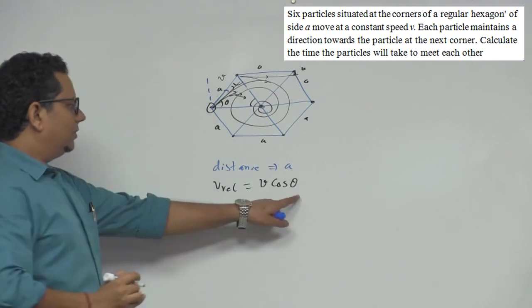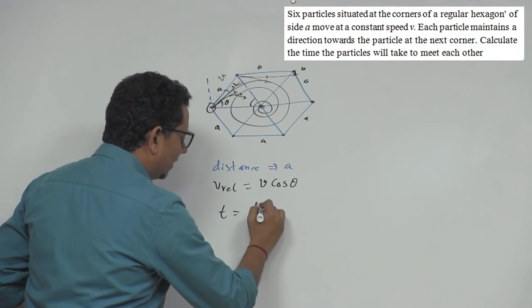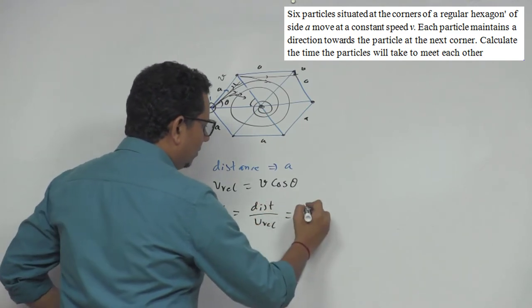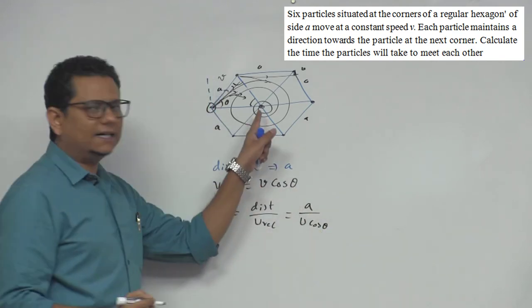So time taken will be equal to a divided by V cos theta. So here for a hexagon or n-sided polygon, you can use square, 10 sides, 20 sides.